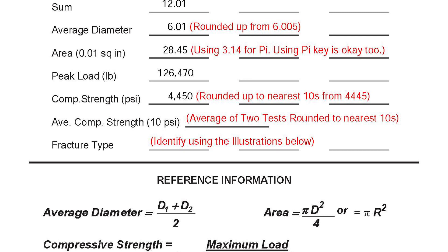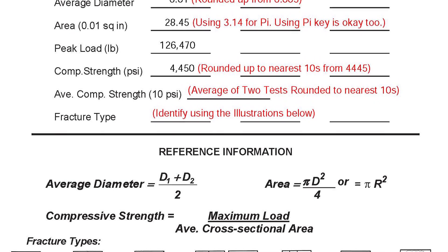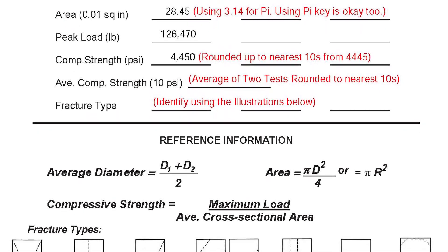The calculation for compressive strength is the maximum load divided by the average cross-sectional area which in this case equals 4,445 psi. That will be rounded up to the nearest tens place or digit to be 4,450 psi. Of course a test result is the average of two compressive strength tests. We just illustrated one for the purpose of this video.